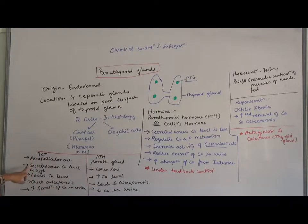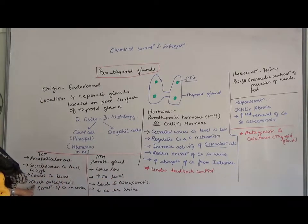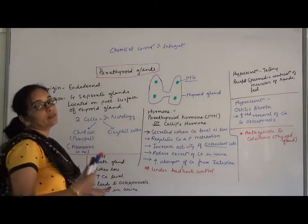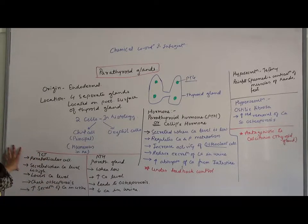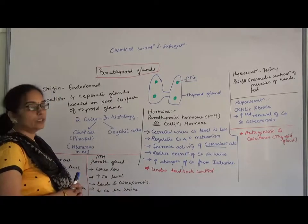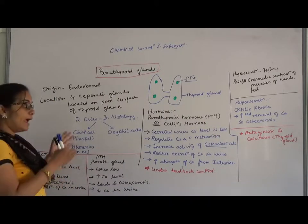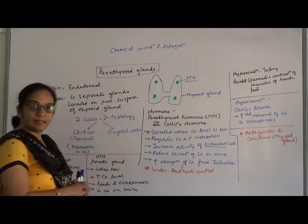When calcitonin is secreted in high calcium conditions, it lowers the calcium level in the blood, while PTH increases the calcium level. Calcitonin checks osteoporosis, but if PTH is hyper-secreted, it leads to osteoporosis. PTH decreases calcium excretion in the urine, whereas calcitonin increases it when calcium is high. Both of these hormones are called antagonistic hormones — they work in opposition to each other to maintain blood calcium at a normal level.